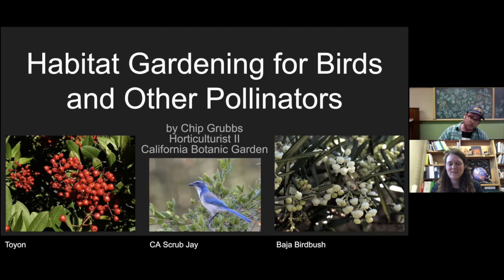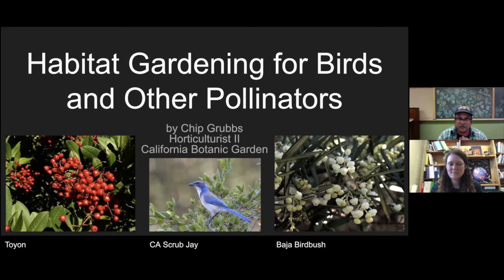We have Toyon here on the left side — big red berries, and they have berries now. We'll go into a slide on Toyon. In the middle is the scrub jay, my favorite bird. Super smart, a lot of personality — they go after a lot of acorns and are really amazing birds. And then the Baja Bird Bush — I don't think you could get a better name to get birds in your garden than the bird bush. We're going to talk about that specifically as well.